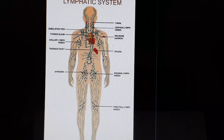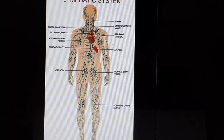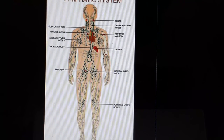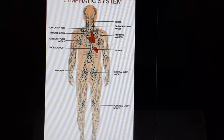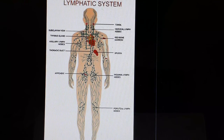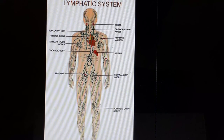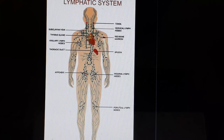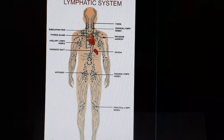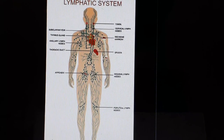Now we will be discussing about lymph. It's another type of fluid found in our body, involved in transportation. Lymph is a colorless fluid present in intercellular spaces.